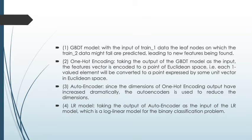Next is one-hot encoding. Taking the output of the GBT model as input, the feature vector is encoded to the endpoint space. Each one-valued element will be converted to a point expressed by some unit vector in Euclidean space. The advantage of one-hot encoding is that the derived Euclidean distance among the representative features may be more appropriate than the discrete distance between the feature vectors.